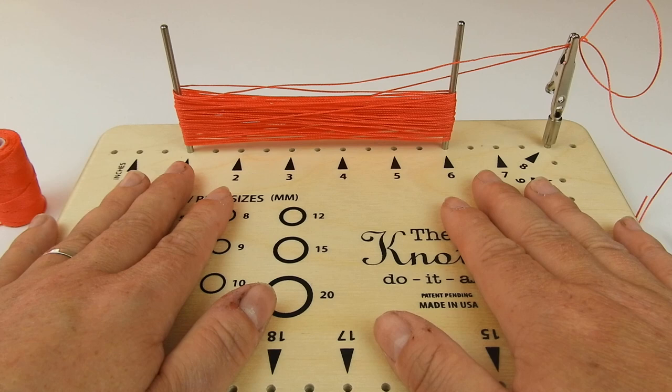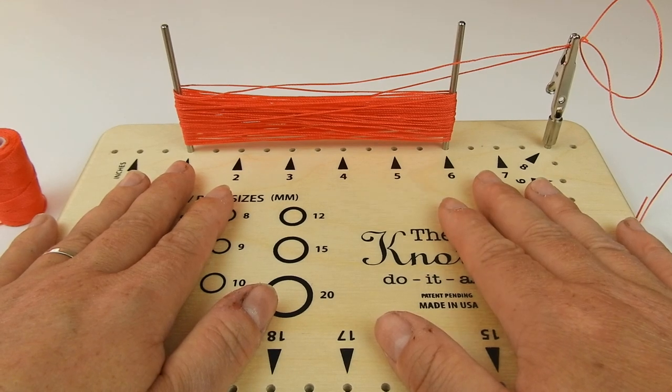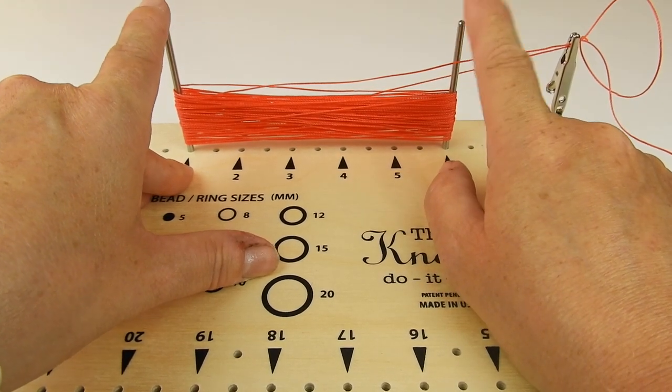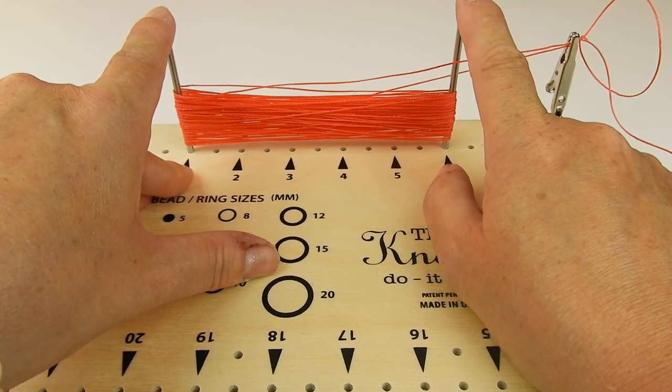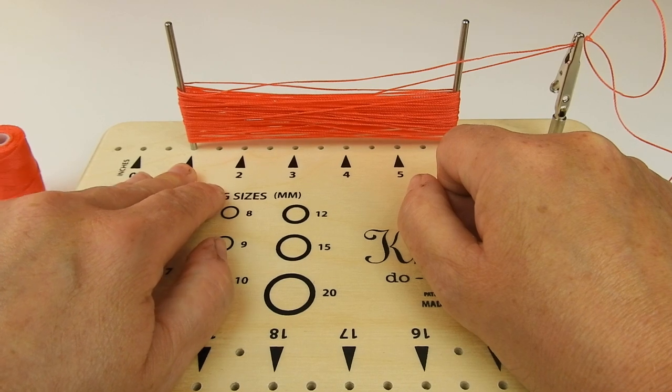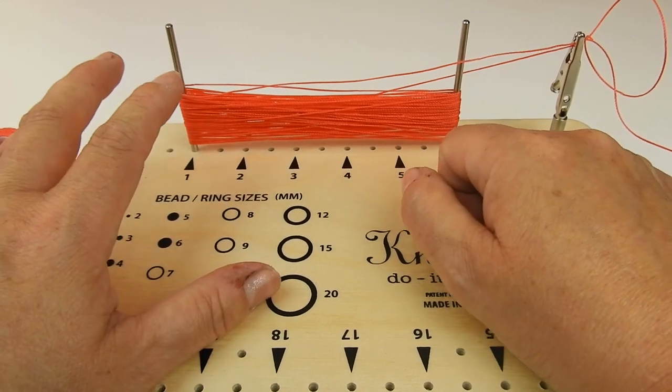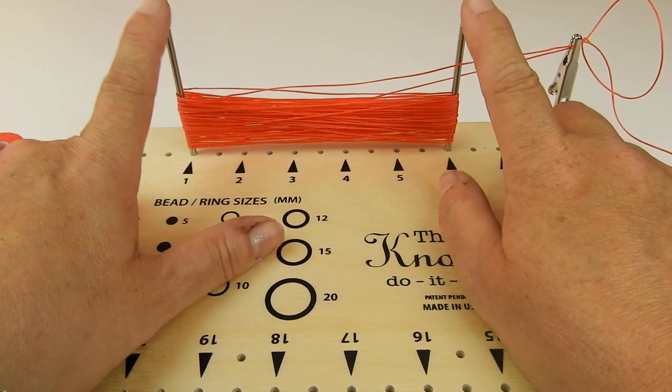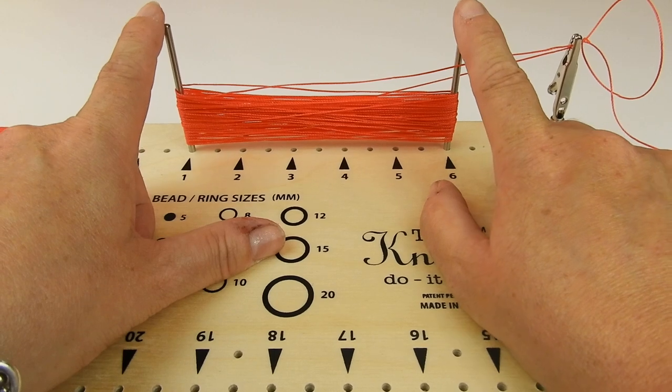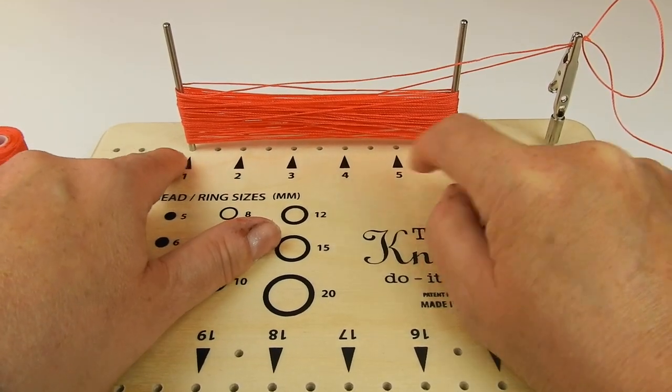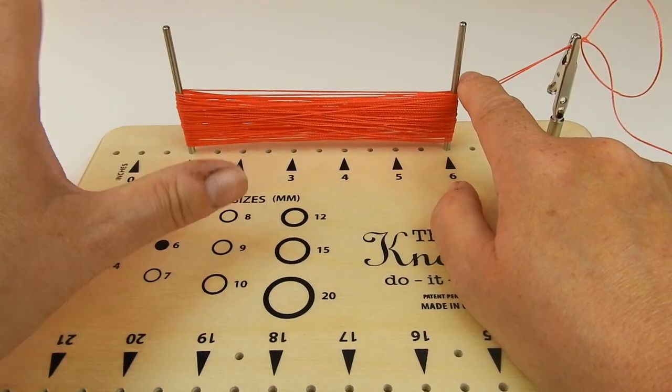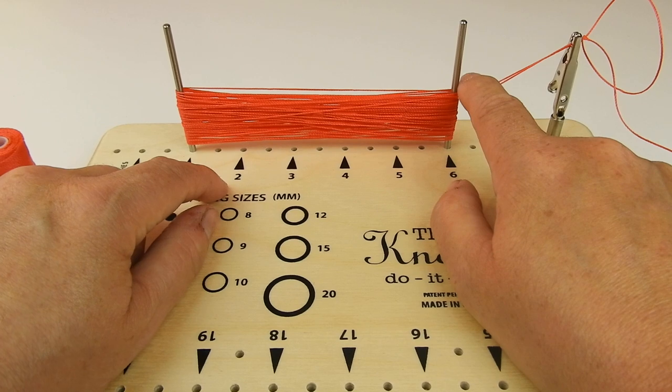Now if you don't have a knotty board, you can use a tassel maker, which is just got two pins that you wrap around. You could use something like a piece of cardboard, two pieces of cardboard and just wrap around, or something like a store card, credit card, or your phone if you've got a smartphone. Anything that you'd be able to slide this off the end. Don't use anything that's got larger ends top and bottom so you're wrapping around the waist of something, because you won't be able to get this off in the end unless you can cut that down if it's cardboard.